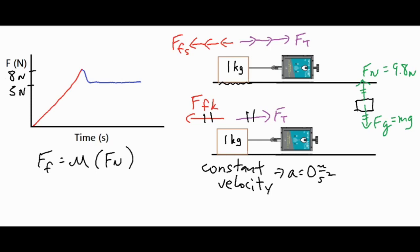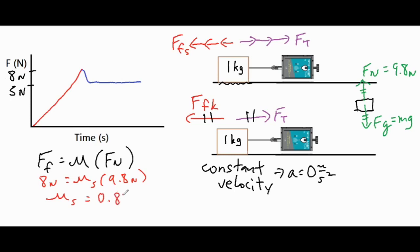For the coefficient of static friction, we set the force of friction equal to mu sub s times the normal force of 9.8 newtons. Dividing both sides by 9.8, the coefficient of static friction comes out to 0.82 — a unitless number, because taking 8 newtons divided by 9.8 newtons causes the units to cancel.